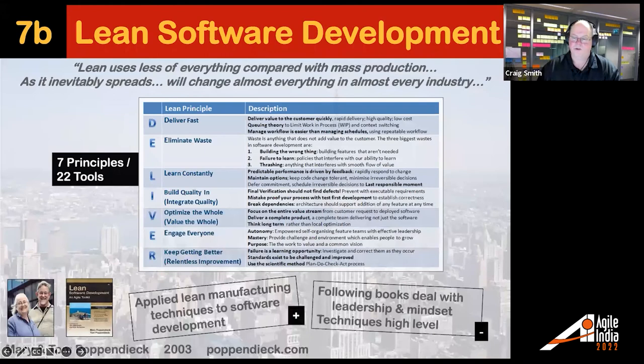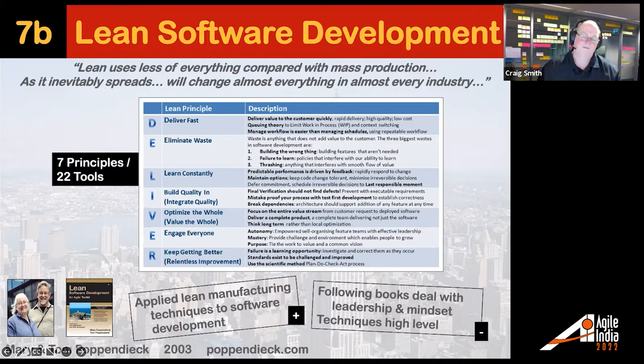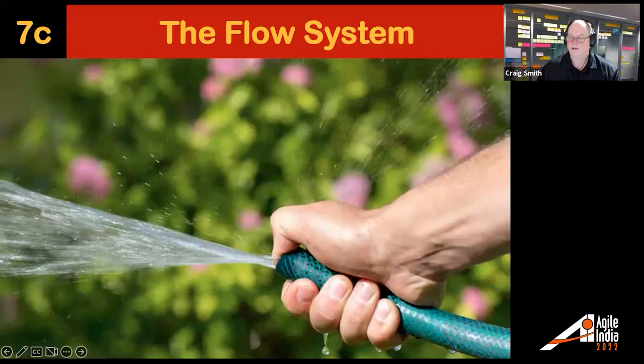The problem with Lean is it doesn't have a technical language. So Mary and Tom Poppendieck in 2003 created something more relatable to technology in their book Lean Software Development — seven principles and 22 tools for applying lean to software development. They took the same lean things and turned them around for a technical process. They wrote a number of books past this. If you get the opportunity to see or hear the Poppendiecks speak, they make a lot of this very real.